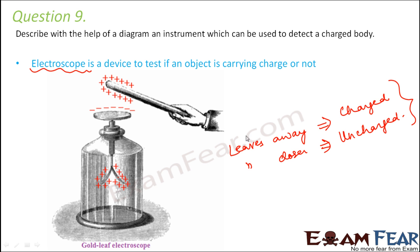If the object carries a positive charge, that positive charge is conducted to the leaves as well, and vice versa for negative charge.